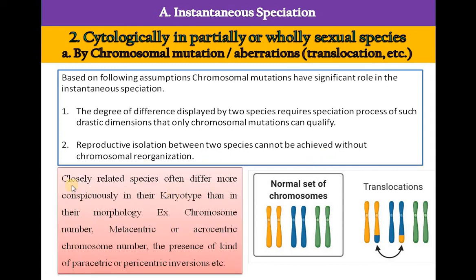Closely related species often differ more conspicuously in their karyotype than in their morphology — for example, in chromosome number, metacentric or acrocentric chromosome arrangement, and the presence of paracentric or pericentric inversions. In the diagram we can see the normal set of chromosomes, and the second diagram shows translocation in the chromosome, which can often lead to instantaneous speciation.